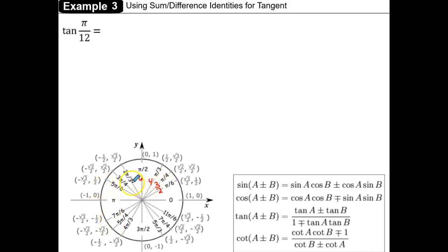I can continue around my circle with 8 pi over 12, 9 pi over 12, 10 pi over 12, 12 pi over 12, and so on.